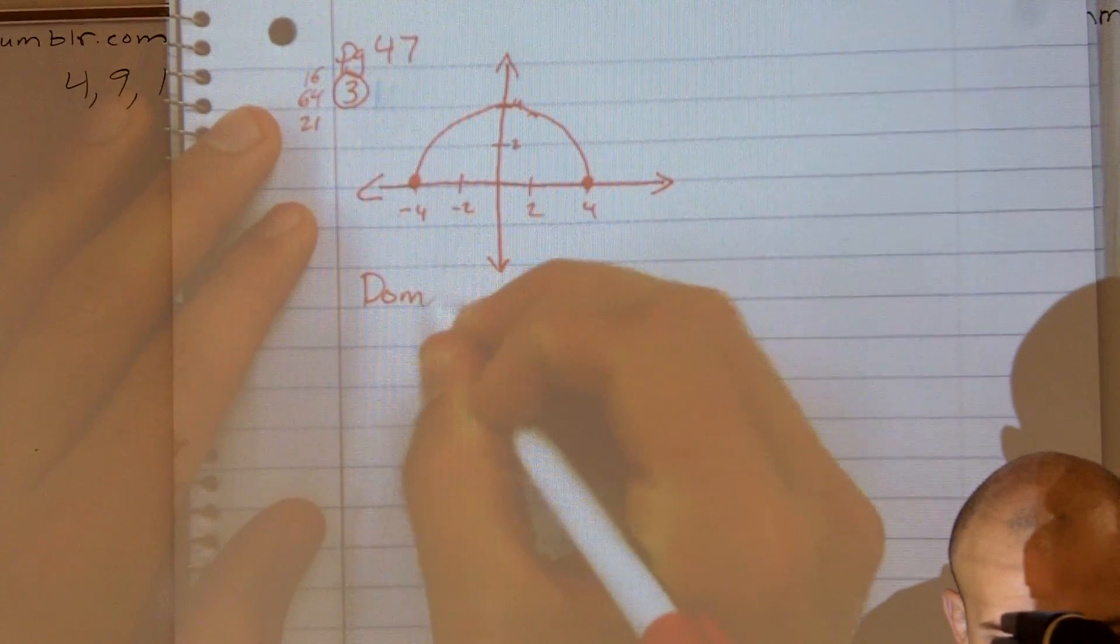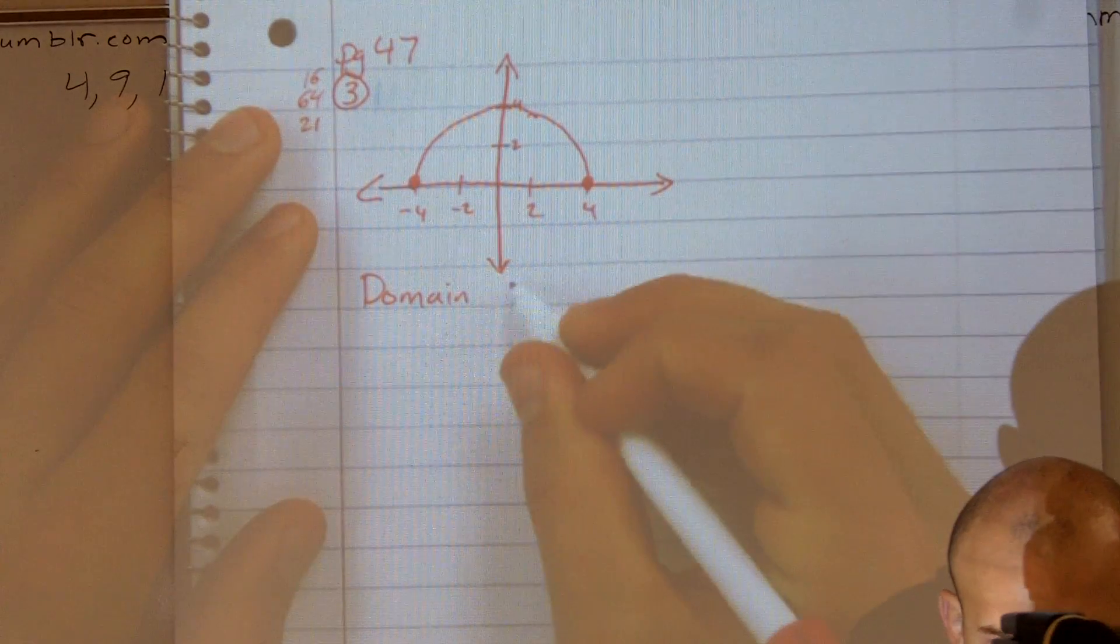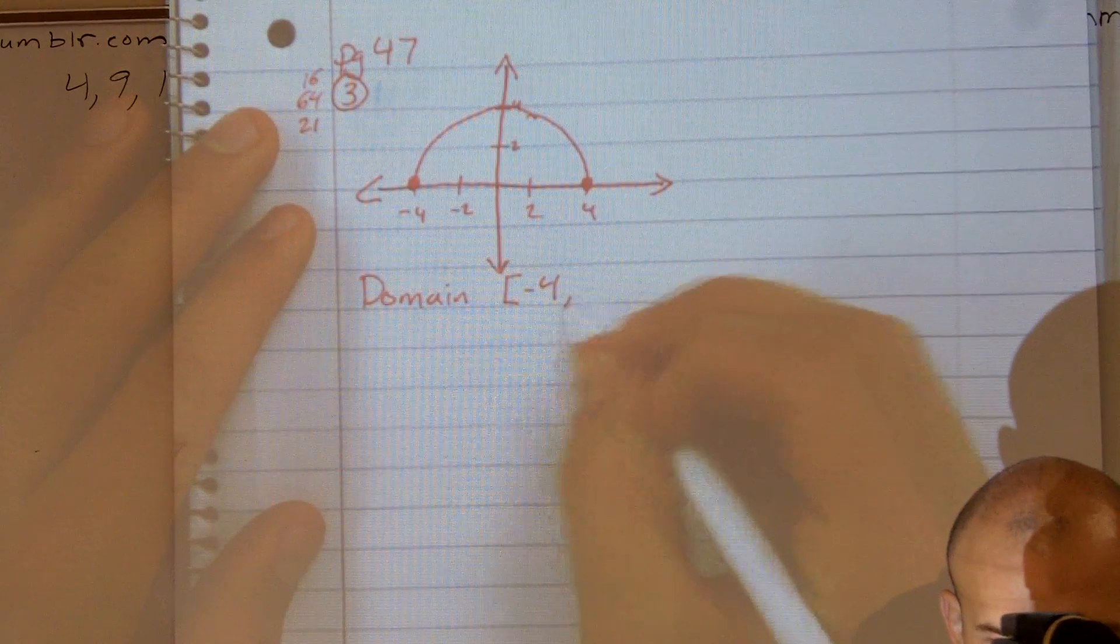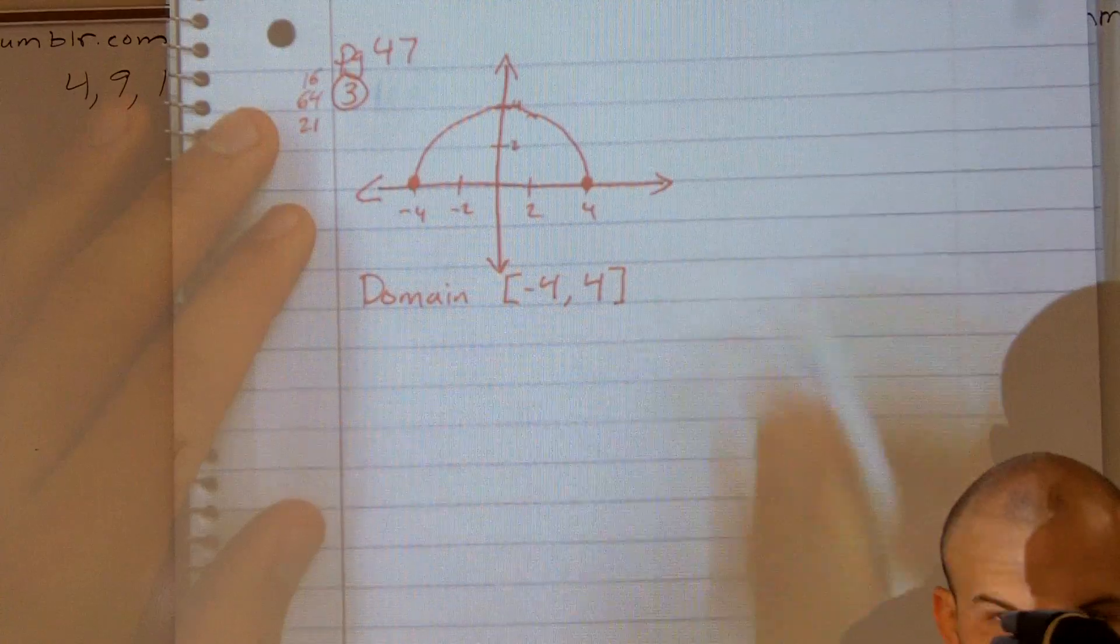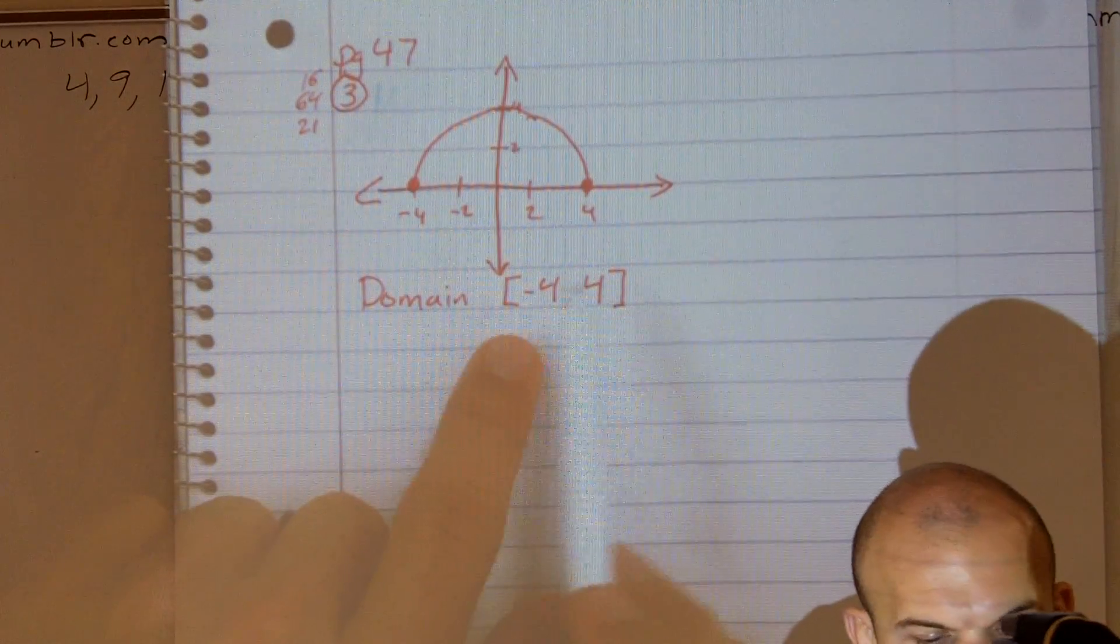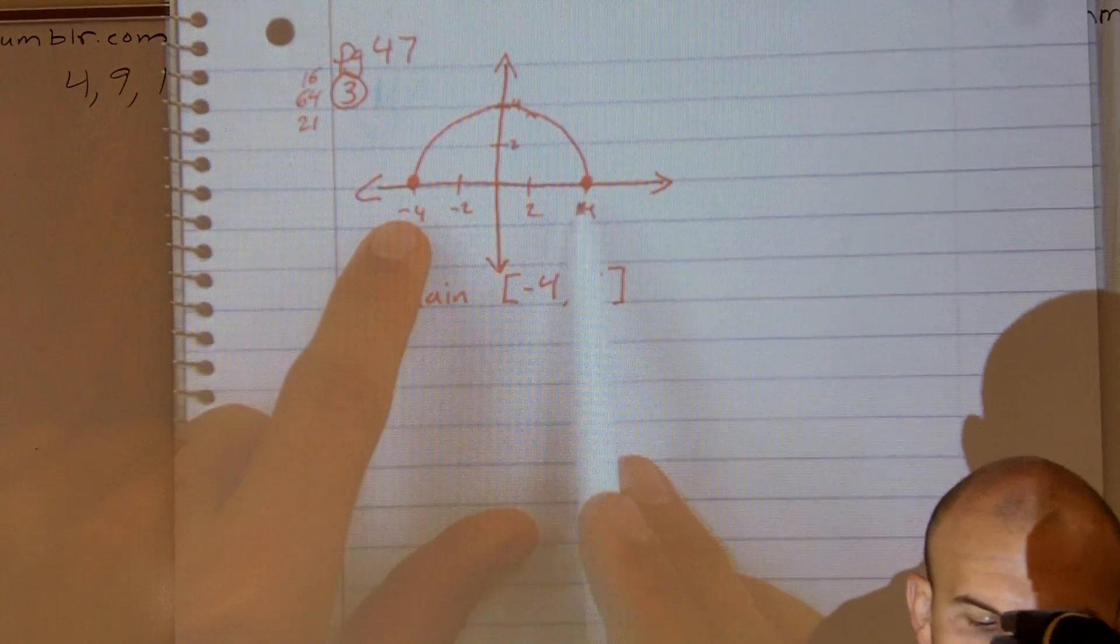So therefore, I'm going to write my domain is going to be negative 4 to 4. Now I use these closed brackets because at negative 4 and 4, those are included inside your domain.